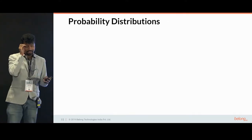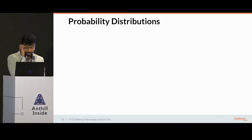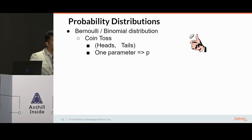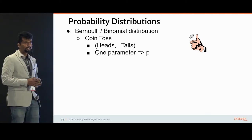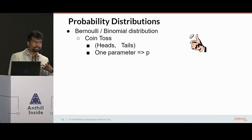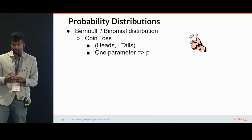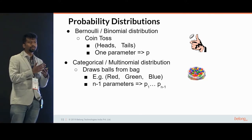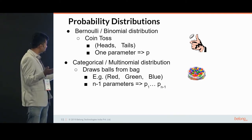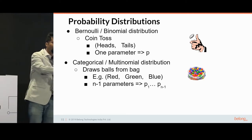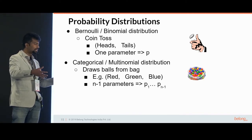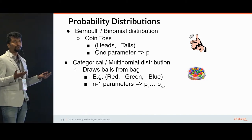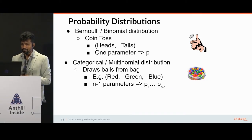I want to quickly explain this algorithm — it's very interesting. Before that, let me do a quick brush-up of probability distributions. I'm sure all of you have heard of the Bernoulli or binomial distribution, which is a coin toss wherein there can be two outcomes. Binomial involves tossing it multiple times and Bernoulli involves tossing it once. Then there is the categorical or multinomial distribution, where the number of outcomes is more than two — not just heads or tails. A classic example is drawing balls from a bag where the bag has different colored balls.